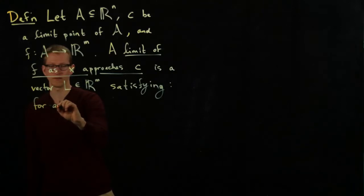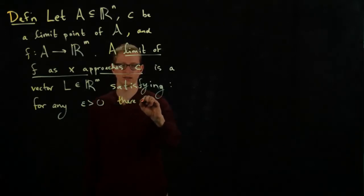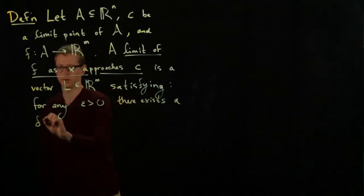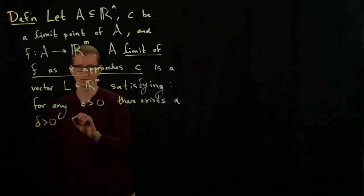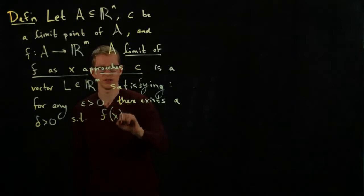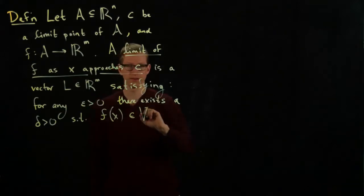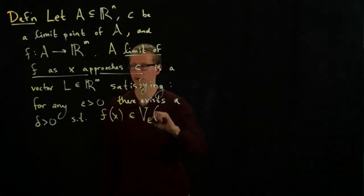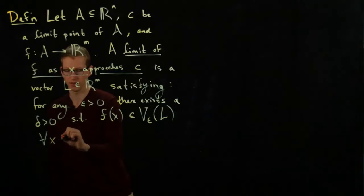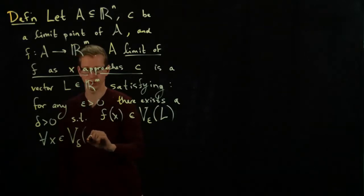For any epsilon greater than 0, there exists a delta greater than 0, such that the image of any point is contained in the neighborhood around this vector L of radius epsilon for all X in a delta radius around the point C.